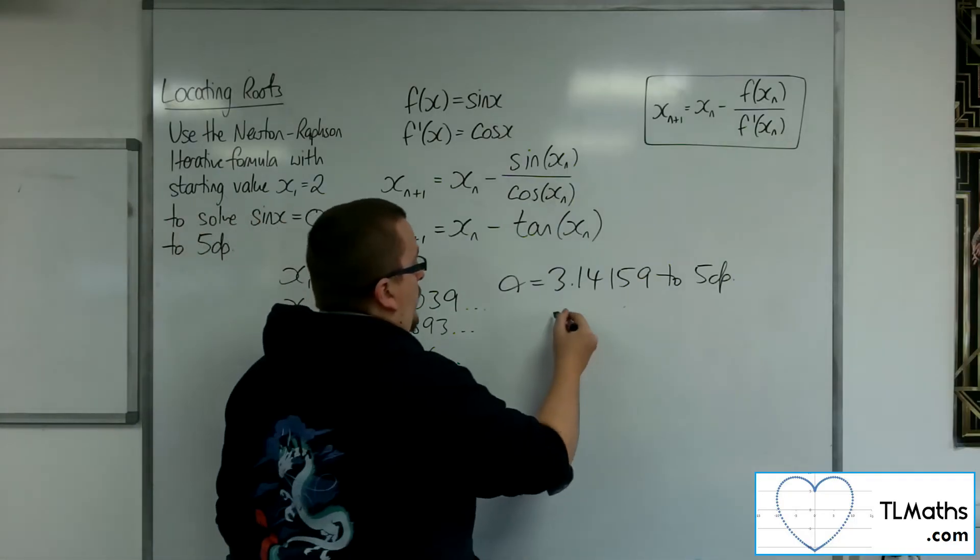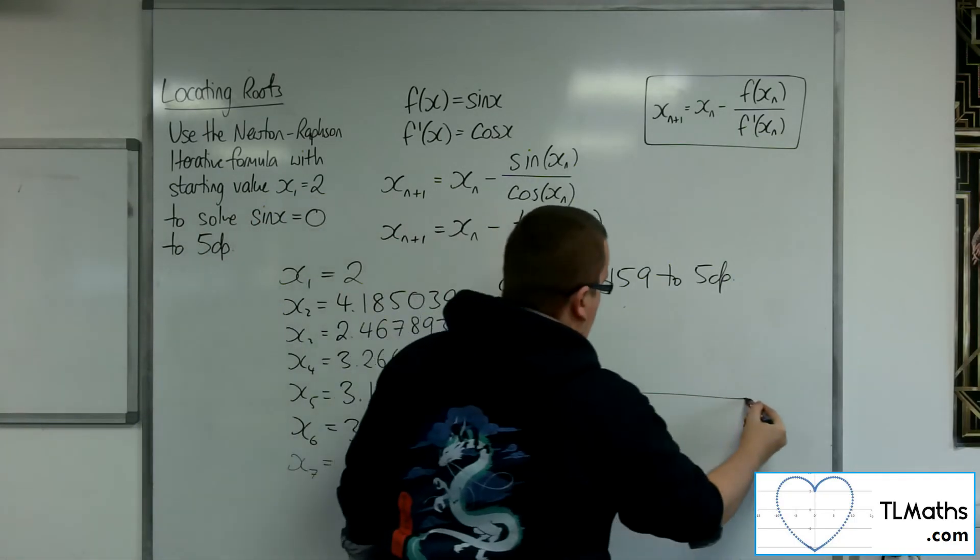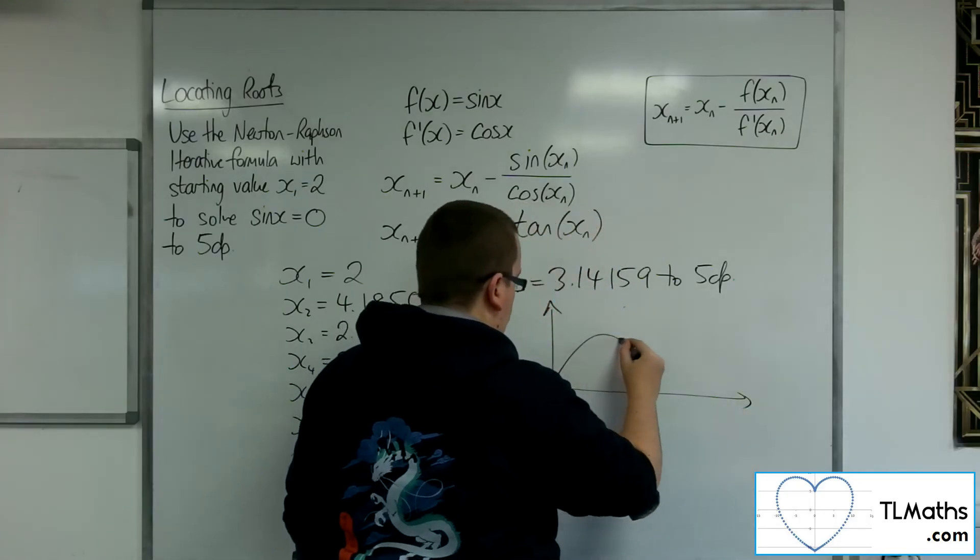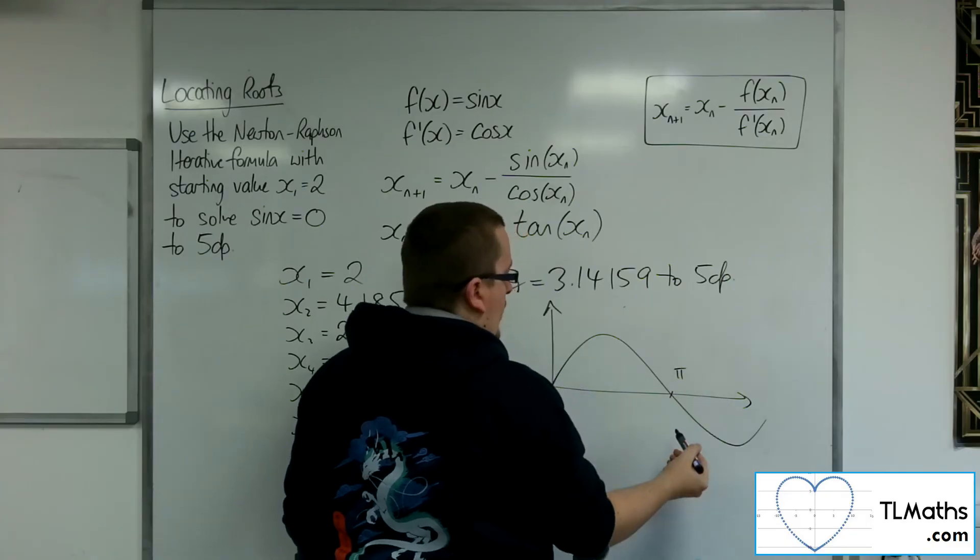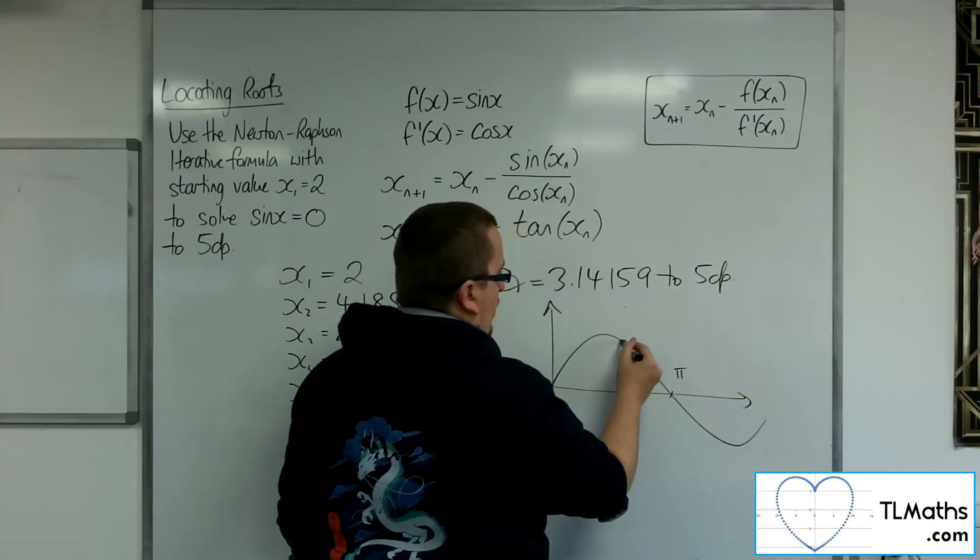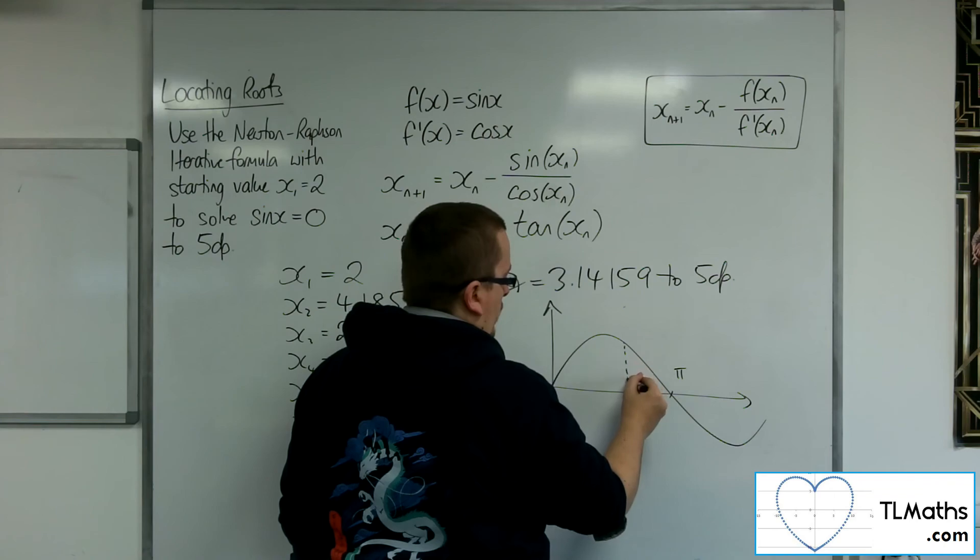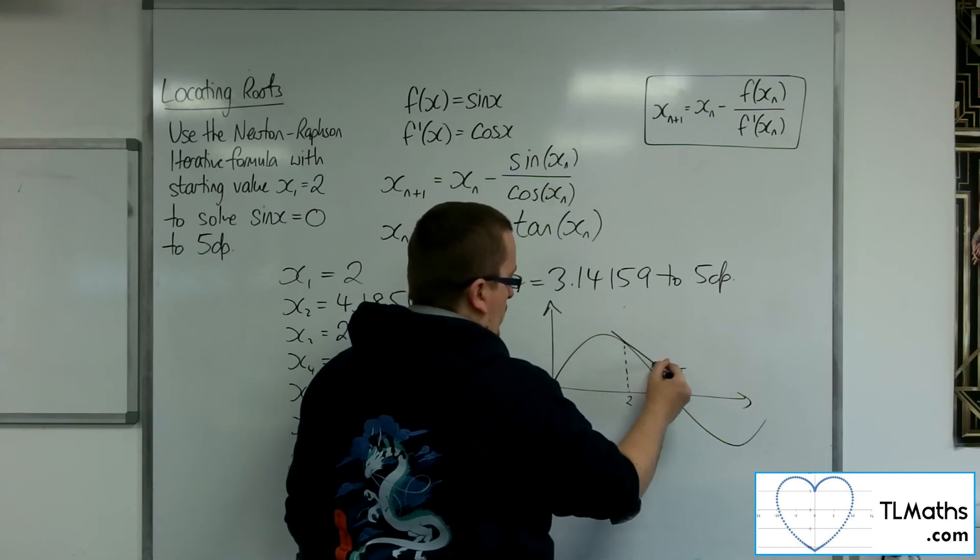And it is because we've got a sine curve here. And here is pi. And what we've done is we've started off at the point 2, gone up to the curve, we've drawn a tangent line,